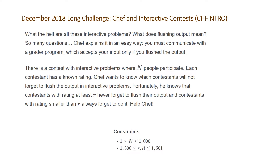The constraints are: the number of contestants n is between 1 and 1000, and r the rating is between 1300 and 1501. So really this is not a hard problem at all — it's more of an introduction to get familiar with flushing output.